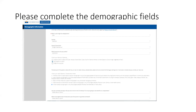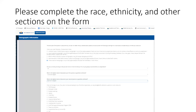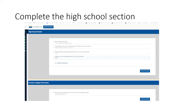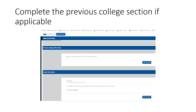Please complete the demographic fields as shown here. Please complete the race, ethnicity, and other sections on the form. For the high school section, please complete it with your graduation year. Once you've done that, please complete the previous college section, if applicable, as shown here.